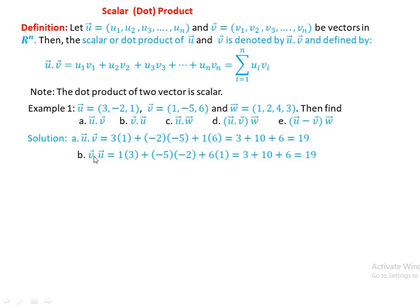We observe that u·v equals v·u, both giving 19. Now for u·w: u has 3 components and w has 5 components, so the dot product of u and w requires equal dimensions. Therefore u·w is not defined.